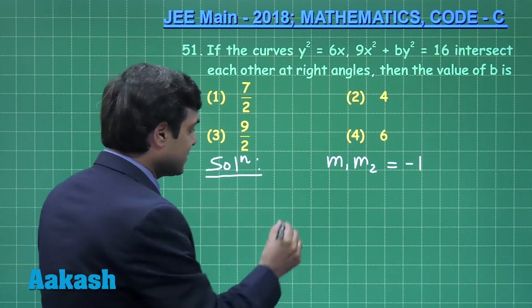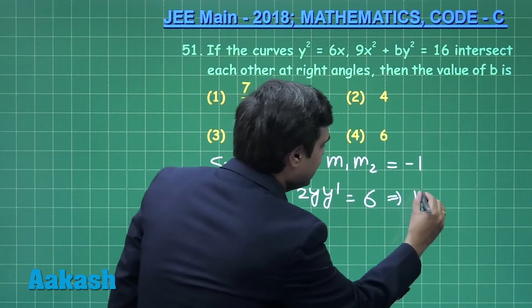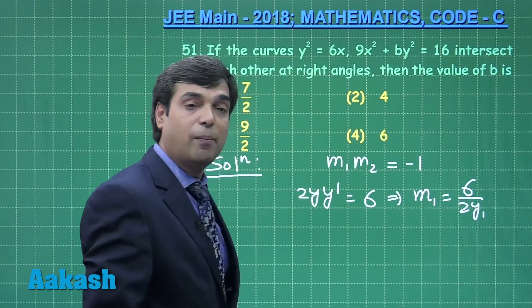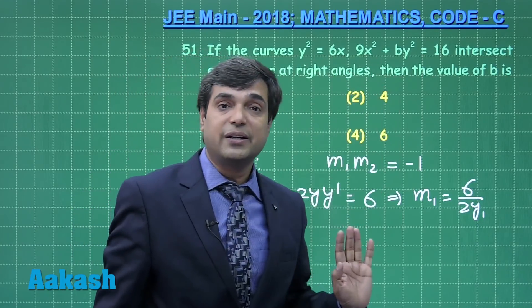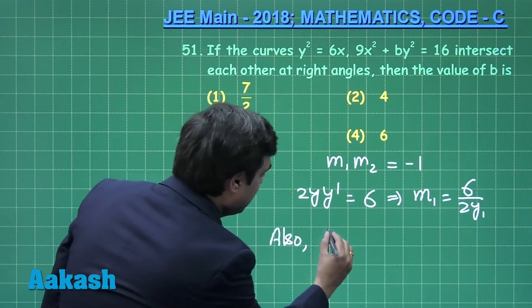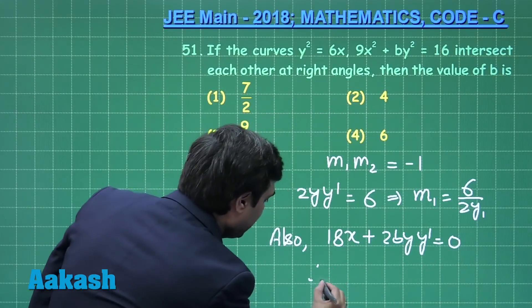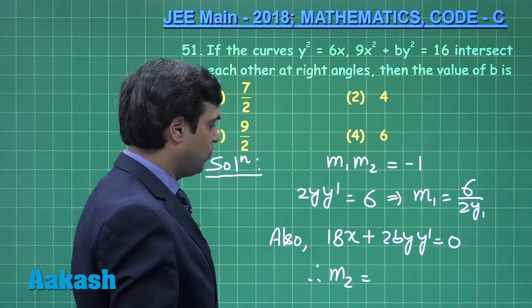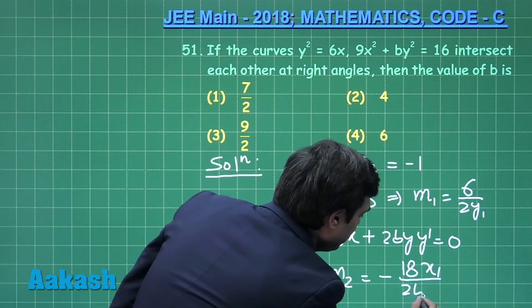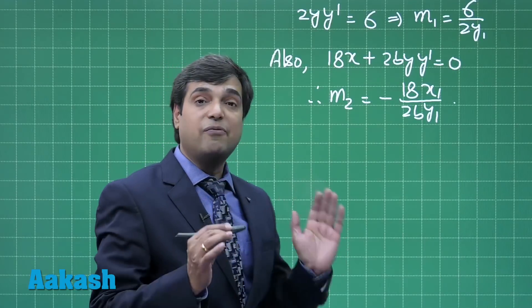The first curve y² = 6x, we can find by differentiating: 2y(dy/dx) = 6. From here we get m₁ as 6/(2y₁) or 3/y₁, considering that these two curves are intersecting at a point (x₁, y₁). From the second curve we can find 18x + 2by(dy/dx) = 0. From here we can see that m₂, the slope for the second one, comes out as -18x₁/(2by₁).